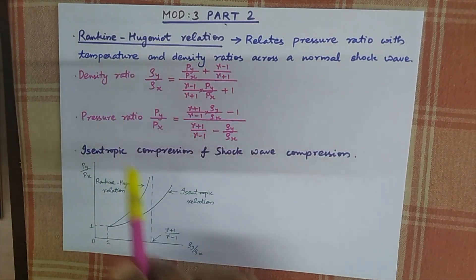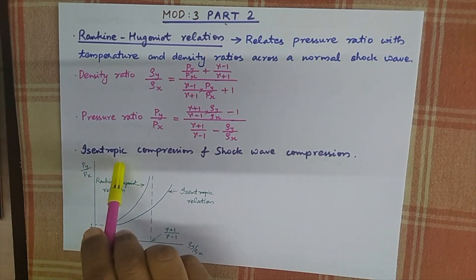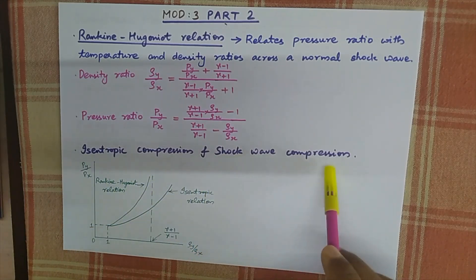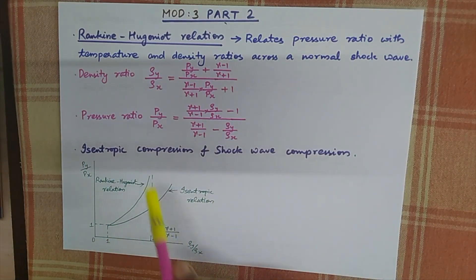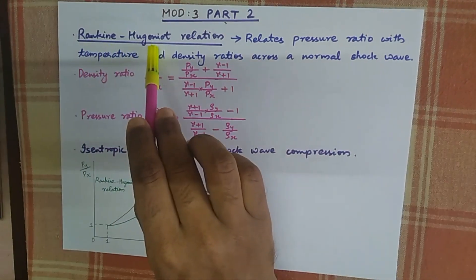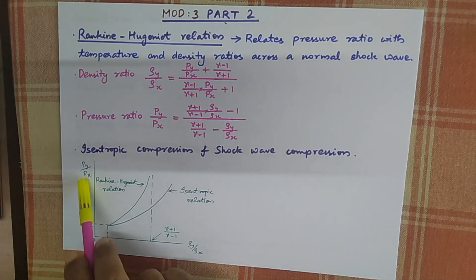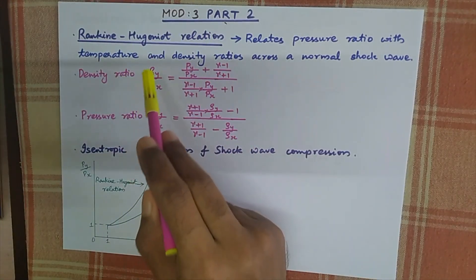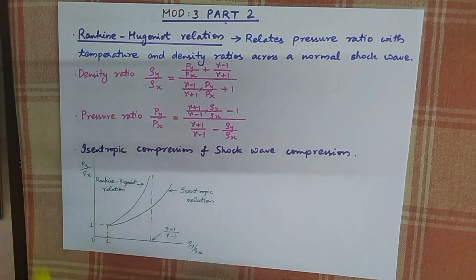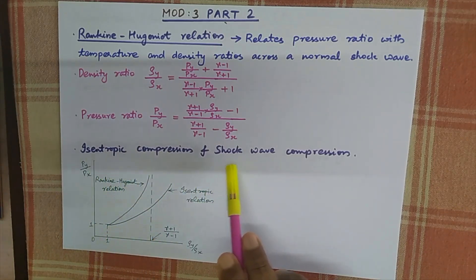These relations are represented graphically, showing isentropic compression and shock wave compression. This graph is used to compare the behavior of the two processes, and we call it the Rankine-Hugoniot relation. The axes are density ratio and pressure ratio, and we plot both the isentropic compression and shock wave compression curves.